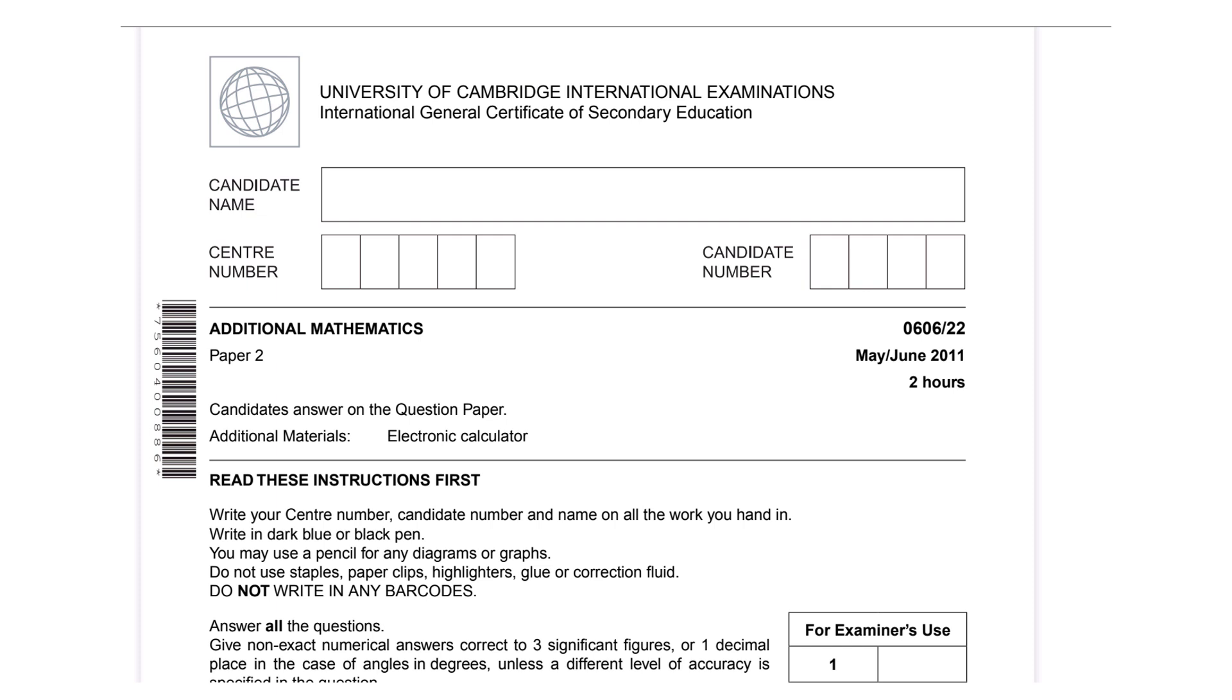This paper is an Additional Mathematics Paper 2 variant 2.2 from the year 2011, May/June session. For IGCSE students, the code for this paper was 0606/22. For GCE O-level students, the code was 4037/22. That means both GCE O-level and IGCSE students had this exact same paper on the same date and time.